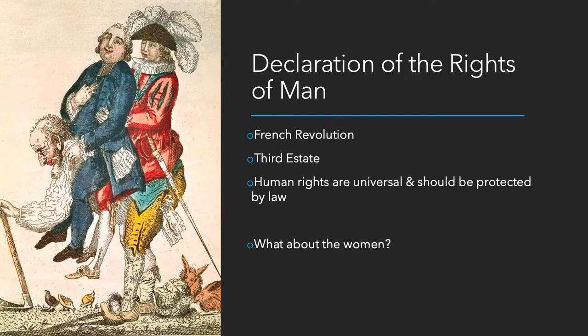Originally the revolution was moderate, basically saying they maybe just want a limited monarchy with a more representative government. Eventually it gets more radical — the Reign of Terror and things like that. But during that moderate phase, they produced a very important document, the Declaration of the Rights of Man, which piggybacks on those natural rights ideas — certain rights that the government can't take away. It sounds very similar to the Declaration of Independence. Thomas Jefferson was the ambassador to France when this was written and always liked to say he helped craft it, though certainly he tried to bring people together during this time.